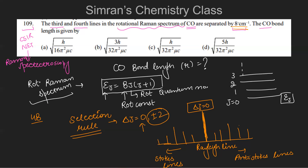The separation between the Rayleigh line and the first Stokes or anti-Stokes line is 6B, where B is the rotational constant. The separation between any two successive Stokes lines (or successive anti-Stokes lines) is 4B.